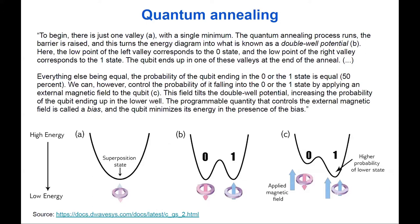From D-Wave's description: initially there is one valley with a single minimum. The quantum annealing process runs, the barrier is raised, and the energy diagram becomes a double-well potential. The low point of the left valley corresponds to state zero, and the low point of the right valley corresponds to state one. The qubit ends up in one of these valleys at the end of the anneal. We can control the probability of falling into zero or one by applying an external magnetic field to the qubit — this field tilts the double well, increasing the probability of the qubit ending up in the lower level.